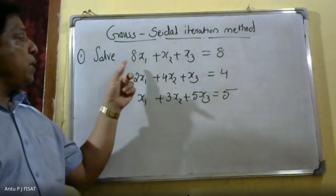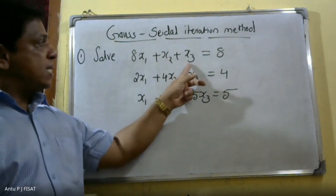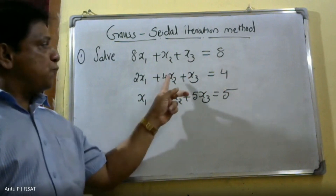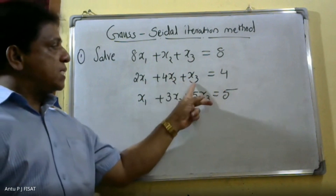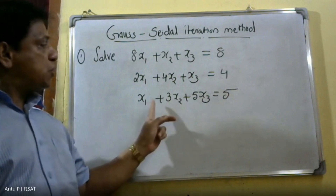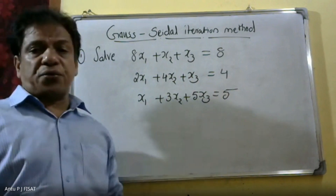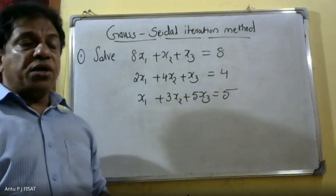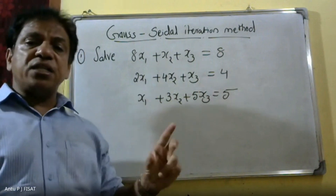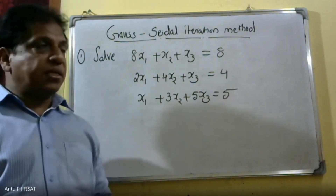Solve: 8x1 plus x2 plus x3 is equal to 8. 2x1 plus 4x2 plus x3 is equal to 4. x1 plus 3x2 plus 5x3 is equal to 5. You have to solve this linear system of equations and find the values of x1, x2, x3.